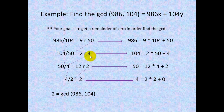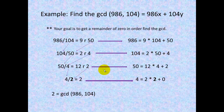We take our remainder and make it the divisor, and our divisor becomes the dividend. Then we have 50 divided by 4 equals 12 with a remainder of 2. Rewriting that equation, we get 50 equals 12 times 4 plus 2.